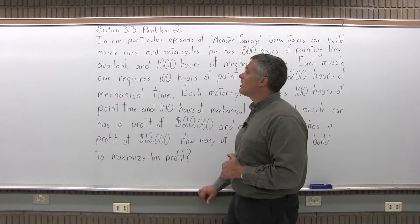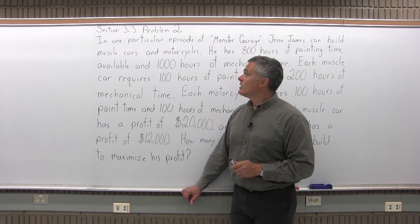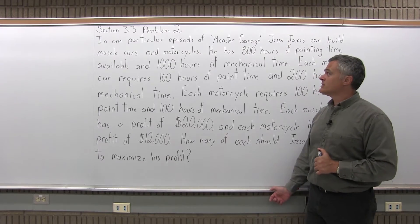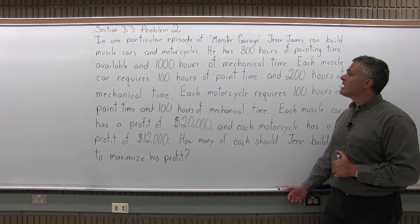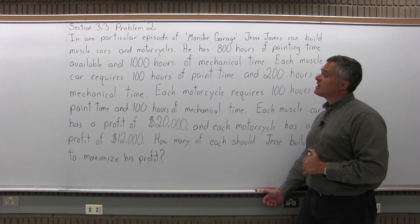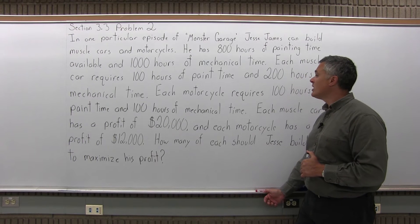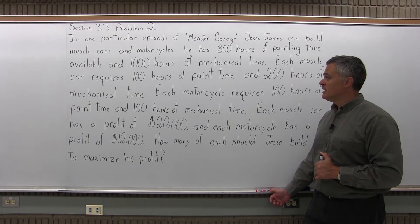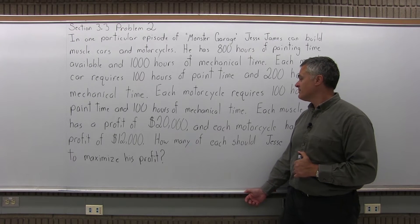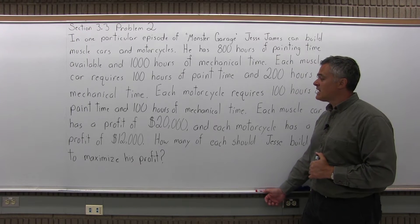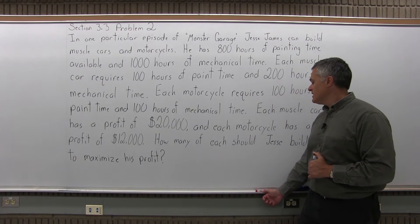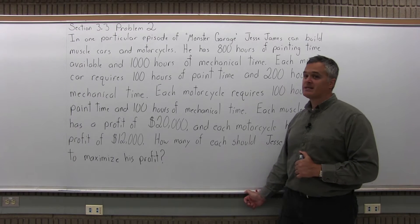This is Section 3.3, Problem 2. It says: In one particular episode of Monster Garage, Jesse James can build muscle cars and motorcycles. He has 800 hours of painting time available and 1,000 hours of mechanical time available. Each muscle car requires 100 hours of paint time and 200 hours of mechanical time. Each motorcycle requires 100 hours of paint time and 100 hours of mechanical time. Each muscle car has a profit of $20,000 and each motorcycle has a profit of $12,000. How many of each should Jesse build to maximize his profit?